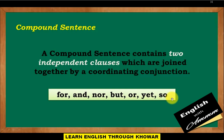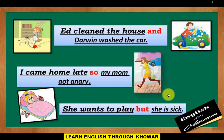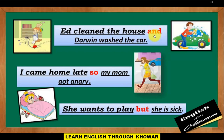Example sentence: 'It cleaned the house and Darwin washed the car.' This is a compound sentence. 'It cleaned the house' is the first independent clause, and 'Darwin washed the car' is the second independent clause. 'And' is the coordinating conjunction joining them.